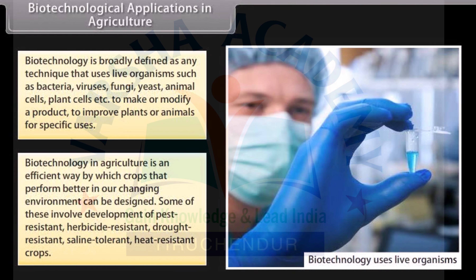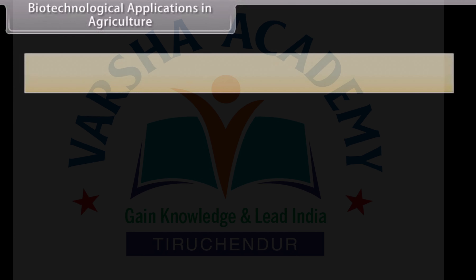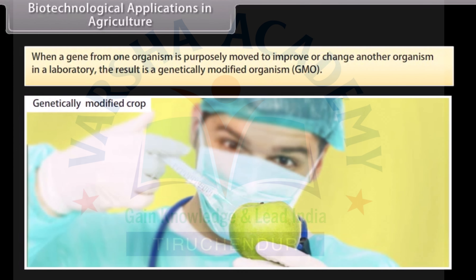Biotechnology in agriculture is an effective way by which crops that perform better in a changing environment can be designed. Some of these involve development of pest resistant, herbicide resistant, drought resistant, saline tolerant, and heat resistant crops. When a gene from one organism is purposely moved to improve or change another organism in a laboratory, the result is a genetically modified organism, or GMO.